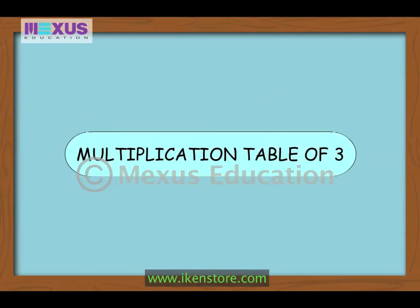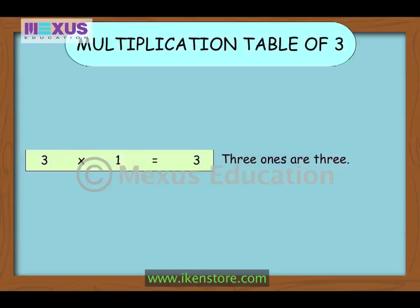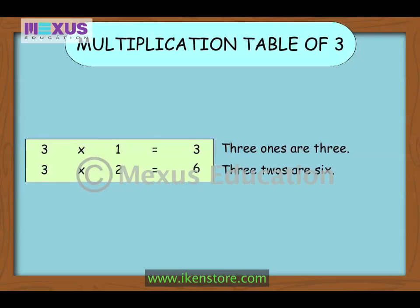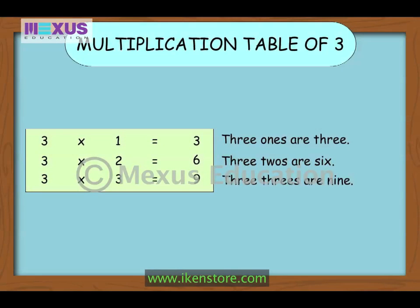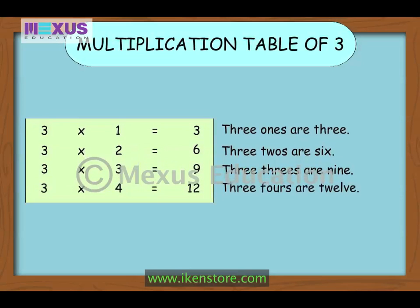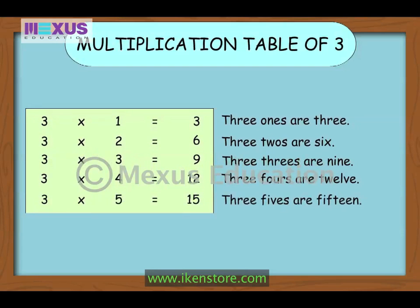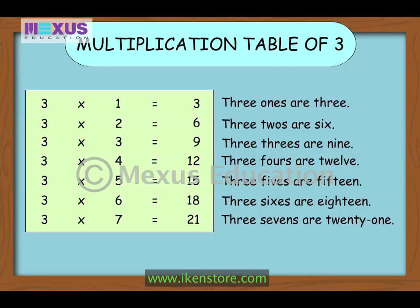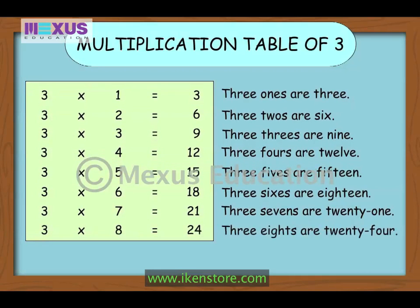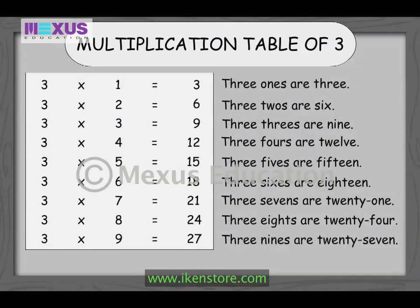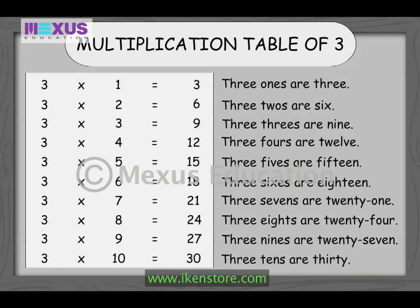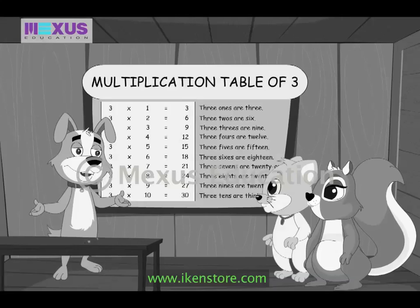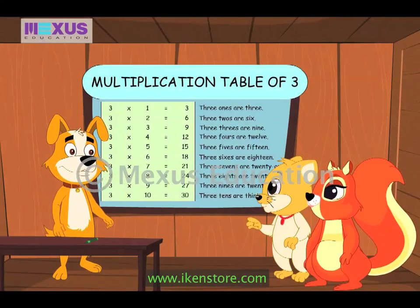Now we come to the multiplication table for the number 3. 3-1s are 3, 3-2s are 6, 3-3s are 9, 3-4s are 12, 3-5s are 15, 3-6s are 18, 3-7s are 21, 3-8s are 24, 3-9s are 27, 3-10s are 30. Well, are you enjoying it? You bet! It's good fun Busta!